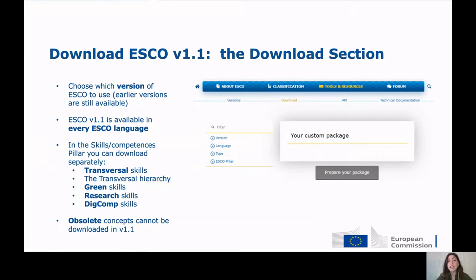In between v1.0 and v1.1, you will find a number of minor updates — for example, ESCO v1.0.8. In minor updates the content does not change at a quantitative level; what changed were smaller things, for example the translation of a concept in one language. You can also pick the language you prefer. ESCO speaks 27 languages, which are all the European languages officially recognised by the European Union, plus Arabic, Icelandic, and Norwegian. Finally, you can go to the ESCO pillar field and pick the pillar you prefer: occupations or skills and competencies.